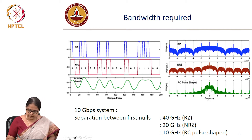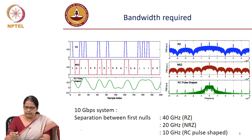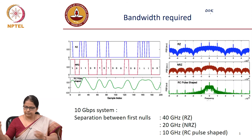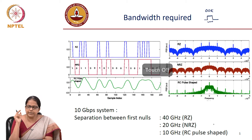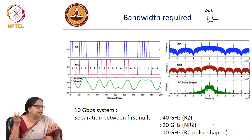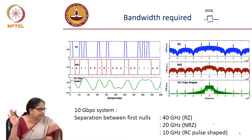When is bit duration different from symbol duration? When you have on-off keying, you are transmitting only one bit in one bit slot. So there is no distinction between bit duration, bit slot, symbol duration, symbol slot, bit rate, baud rate — everything is the same.